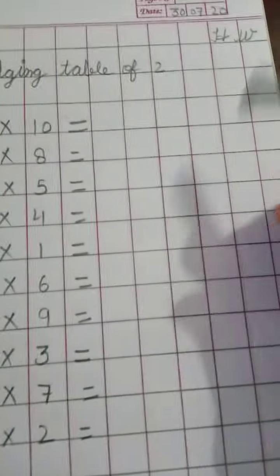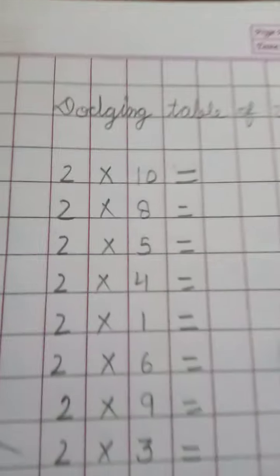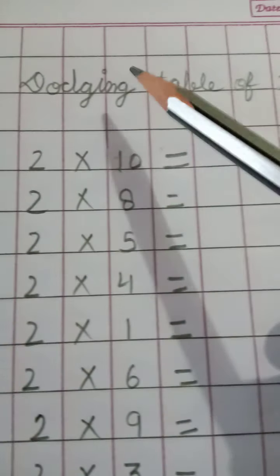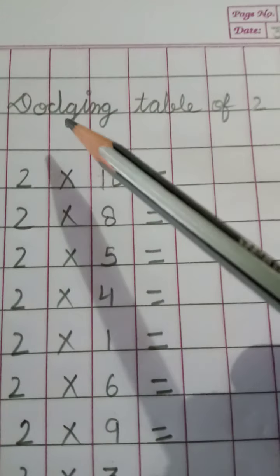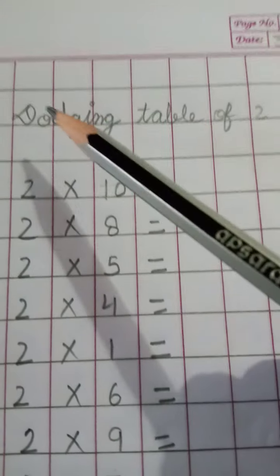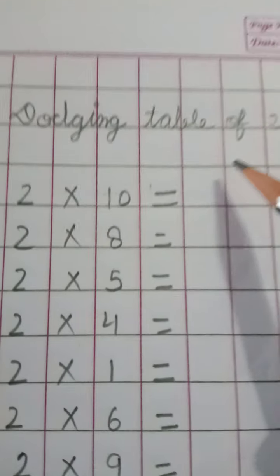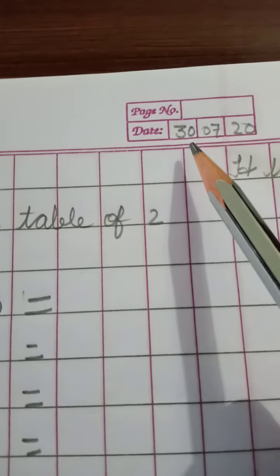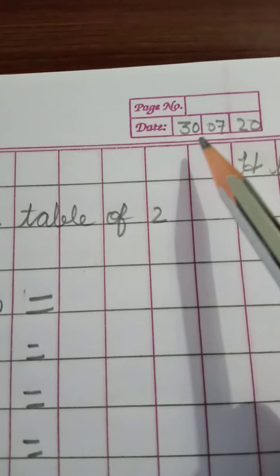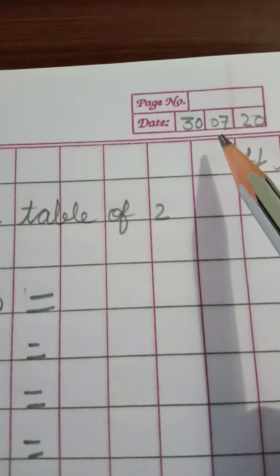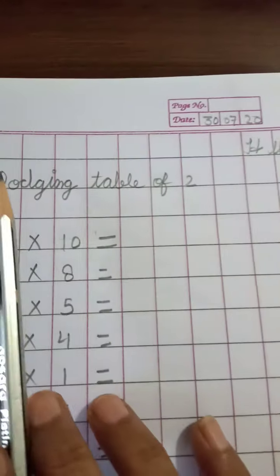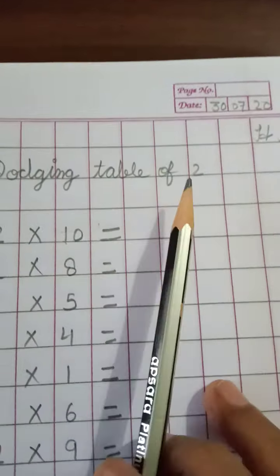Today I will give you the dodging table — the dodging table of 2. First of all, mention the date: 3, 30, 7, 20. Homework: Dodging table of 2.